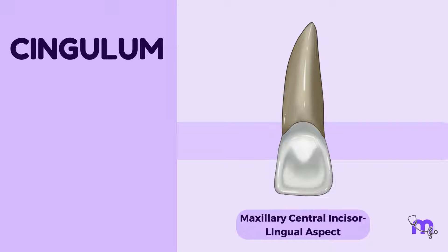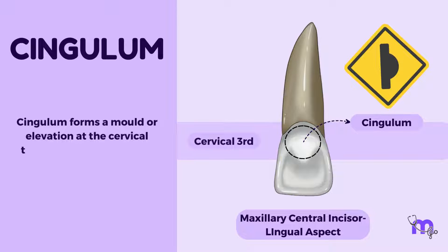Now, what is a cingulum? Remember, we said the lingual portion develops from another lobe that forms the cingulum. Cingulum forms a mold or elevation at the cervical third of the lingual side of anterior teeth. Here is a quick question for you.